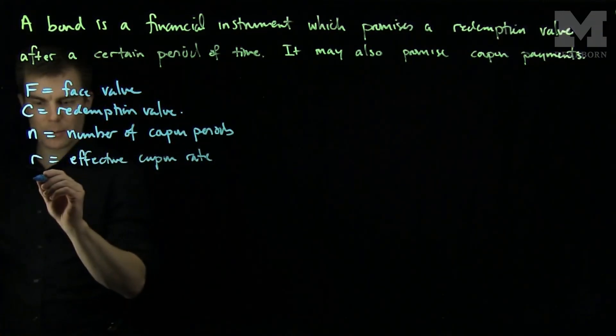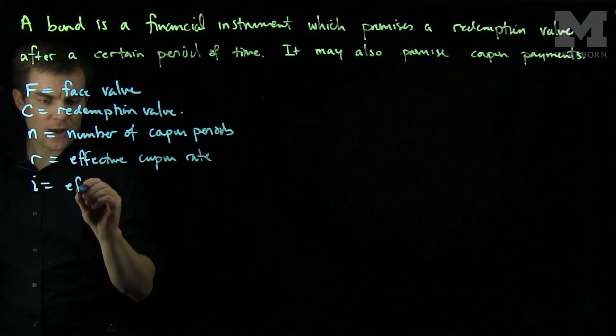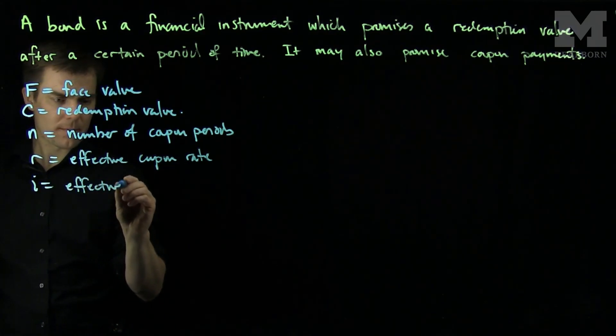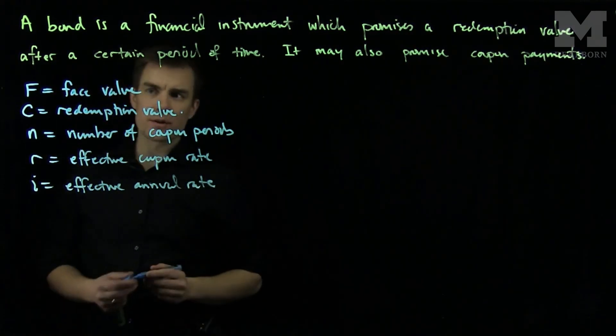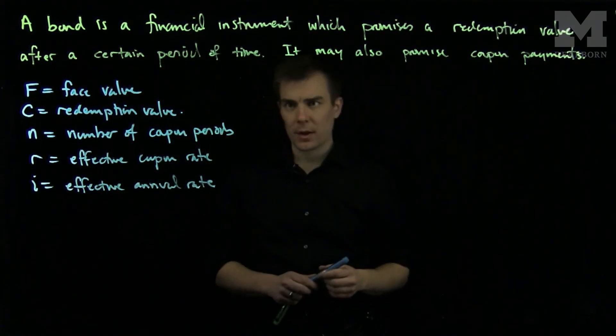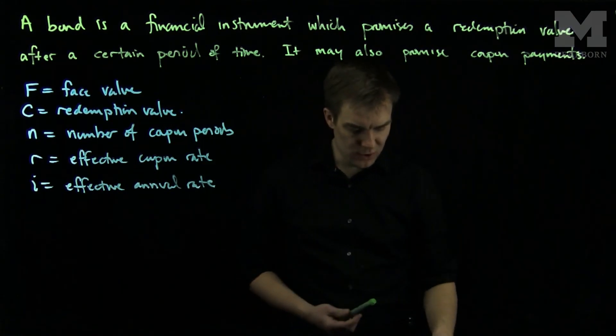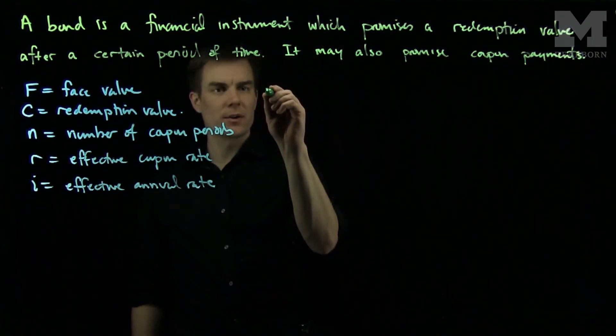Then with the assumption that I is the effective annual interest rate, we can determine how to price a bond. So what will happen is, let's look at the following stream of payments. A bond will have the following stream of payments.